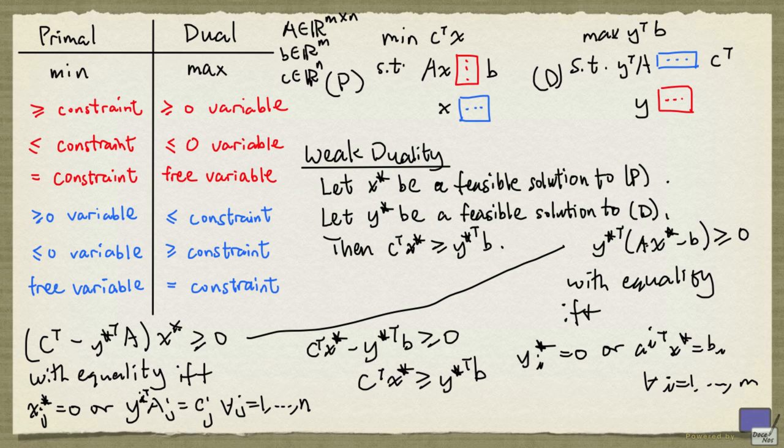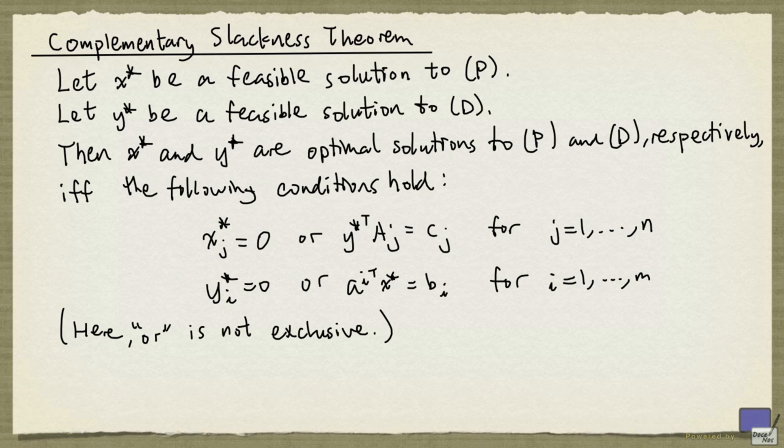And so we have the following theorem, known as the complementary slackness theorem. So it states the following. Let x star be a feasible solution to the primal problem. Let y star be a feasible solution to the dual problem. Then x star and y star are optimal solutions to p and d respectively, if and only if the following conditions hold.